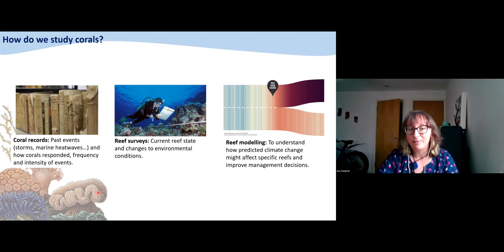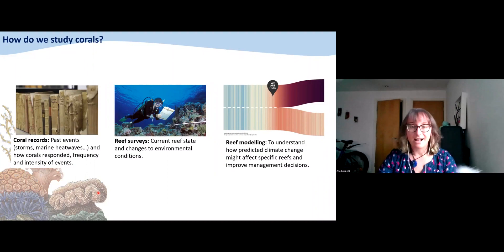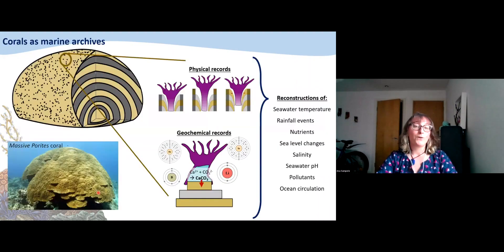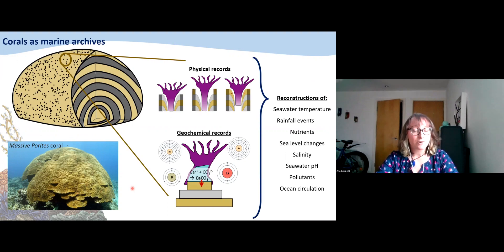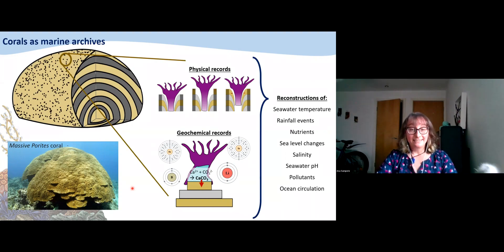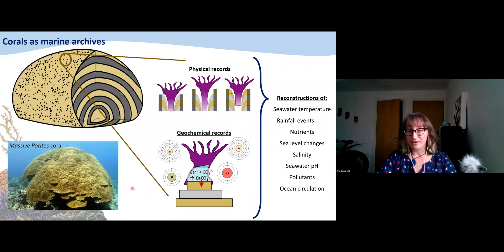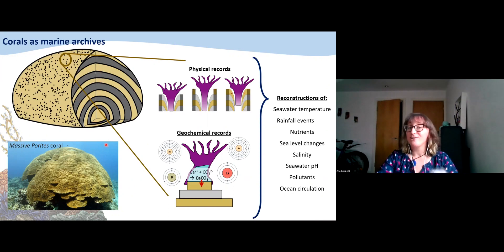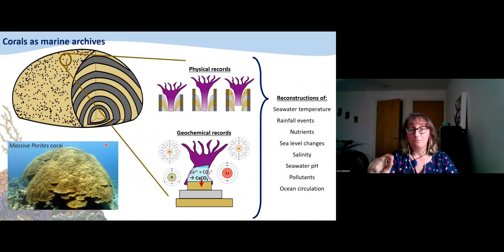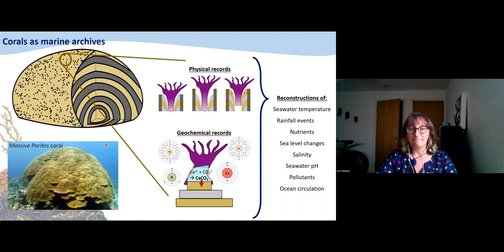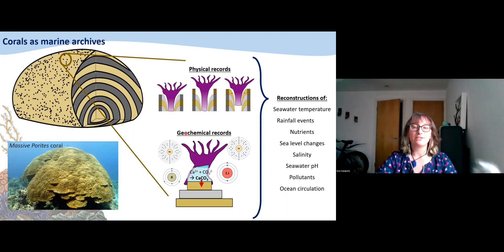How is it even possible to travel in time and see what the environment was like a hundred years ago? That's thanks to this type of coral. They are very appropriately known as massive corals or boulder corals, because they grow massive. Not only do they grow massive, they grow for hundreds of years and they grow in bands — pretty much like tree rings. You can count bands, analyze what was going on in a specific year, and know what the environment was doing at that precise point in time. To recover this, we look at two different records from these corals: physical records and geochemical records.